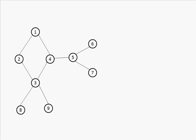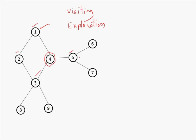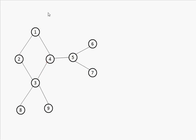For discussing traversal methods, I have to tell you about two terms. Visiting a vertex means going through some vertex. The next term is exploration. Exploration means visiting all the adjacent vertices of a given vertex. For example, for vertex 4, the adjacent vertices are 1, 3, and 5. And for 5, adjacent vertices are 6, 7, and 4. These are the two terms using which we can study breadth first search and depth first search.